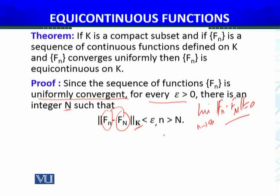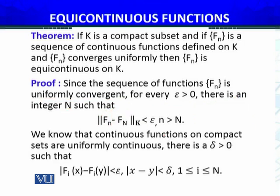Secondly, we know that continuous functions on compact sets are uniformly continuous. There is a δ > 0 such that |fi(x) - fi(y)| < ε whenever |x - y| < δ, and this holds especially for i from 1 to capital N. I will use this when I need to show this sequence of functions is equicontinuous on the compact set K.